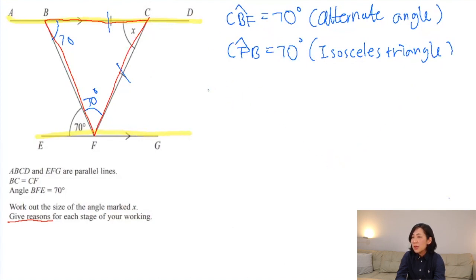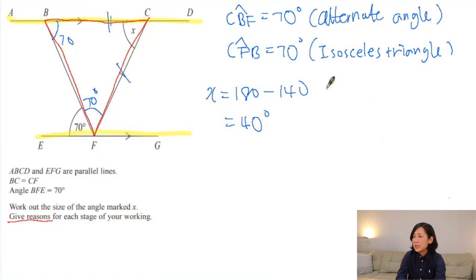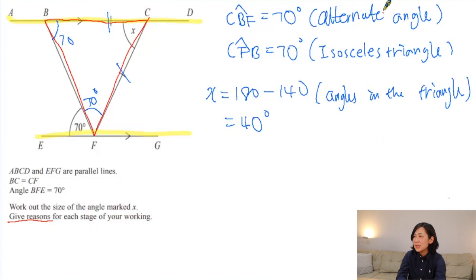Now you can notice that x is the other angle of the triangle. So 180 take away 40 gives x equals 40. We write 'angles in a triangle' as the reason. So now we've got our answer and all our reasons.